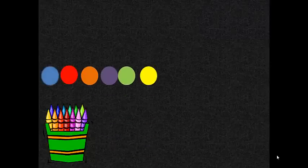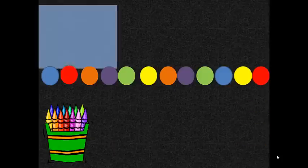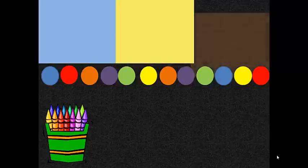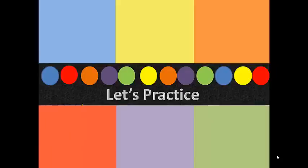Today we are going to use colored dots to help us sort the colors. Each dot is a different color. We are going to move the dots to the spots, the blue spot, the yellow spot, orange, red, purple, and green. Let's practice sorting by colors.